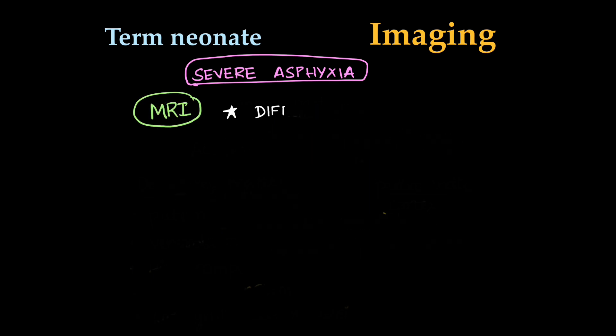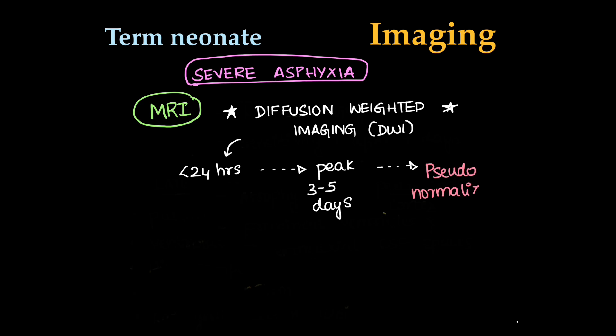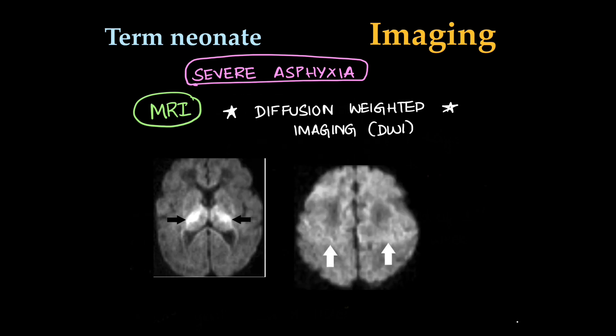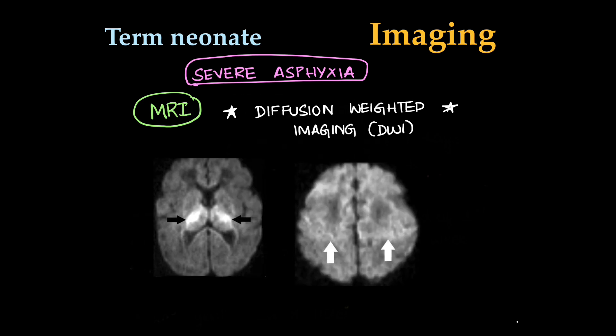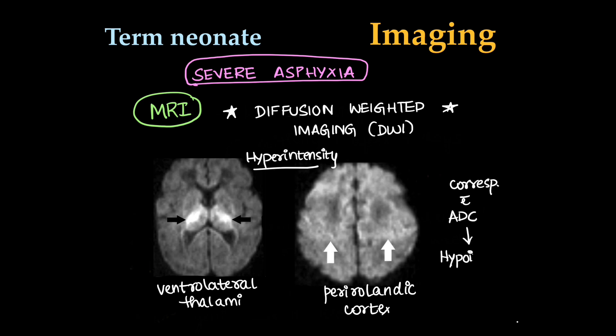Coming to MRI in a term neonate with severe asphyxia, DWI is the most important sequence since it can be used within 24 hours. The findings will peak in 3 to 5 days of imaging. Later, it will pseudo-normalize at the end of the first week. So at the end of first week, if diffusion is normal, doesn't mean the brain is normal because it is pseudo-normalized. Here we can see diffusion-weighted images showing hyperintensity in ventrolateral thalami and perirolandic cortex. This has to be correlated with hypointensity on ADC maps.